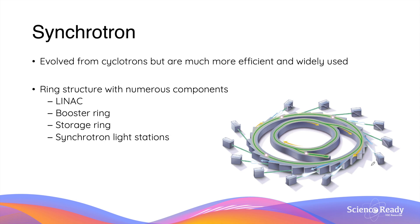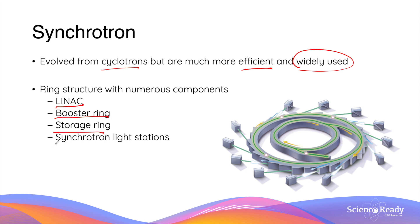Synchrotrons are the mainstay of particle accelerators used in modern physics. These accelerators evolved from cyclotrons but are more efficient and more widely used nowadays. The synchrotron has a very complex structure with numerous components: it is made of a linac, a booster ring, a storage ring, and what we call synchrotron light stations. We'll talk about these components individually.